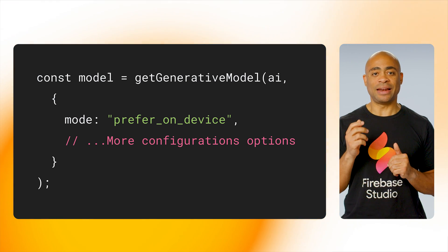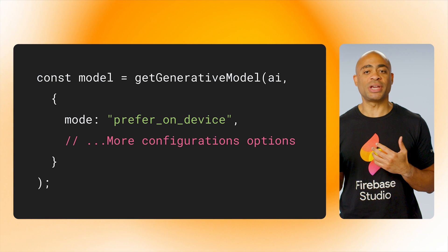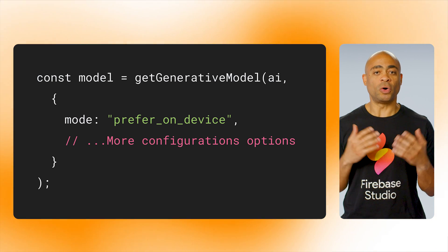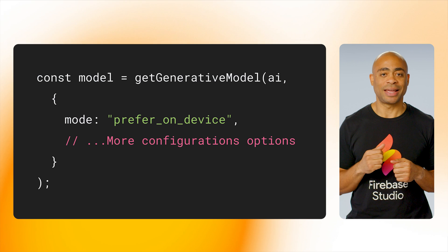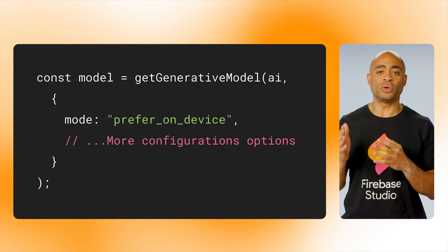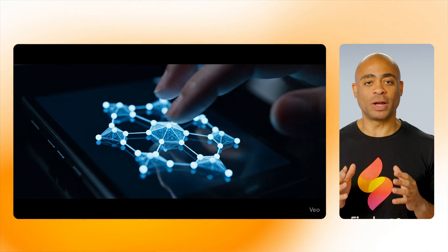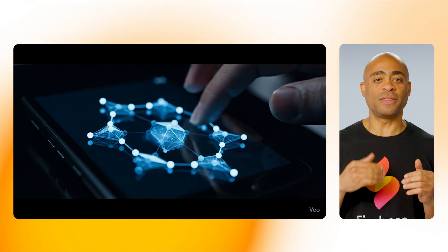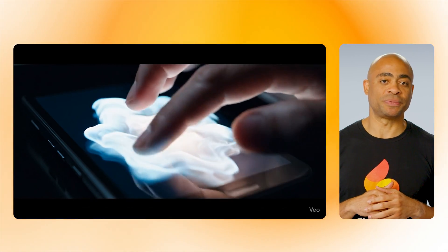And then if the on-device model isn't available — like when the user is on a different browser or the on-device model needs to be downloaded — the SDK will automatically route the request to the cloud-hosted model as a fallback. This gives your users a seamless experience to switch between executing locally and on the cloud without changing their in-app experience all that much.